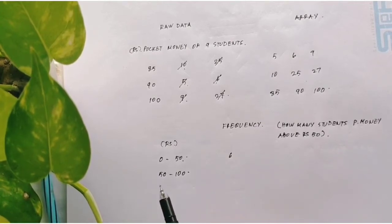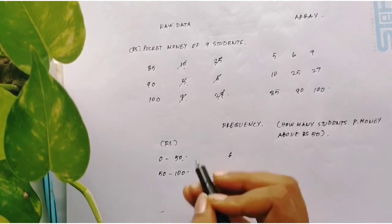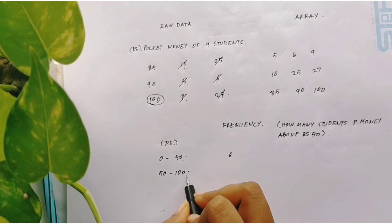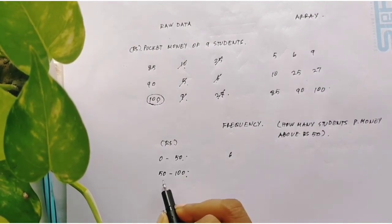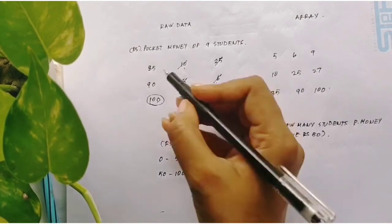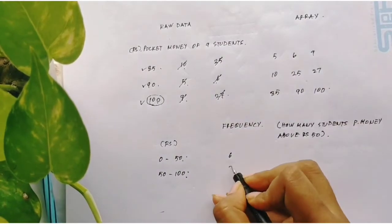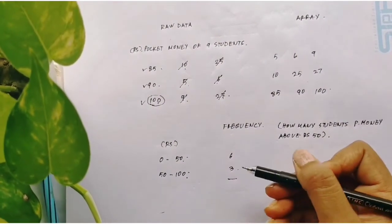Now the second group is how many students have received pocket money above rupees 50, that is 50 to maximum number is rupees 100. You have to stop here, 100. So how many students have received pocket money ranging rupees 50 to 100? Is 1, 2, 3. So it is 3.